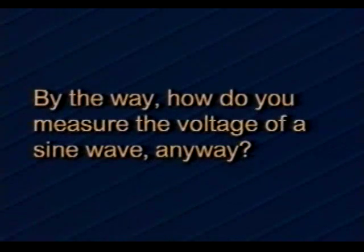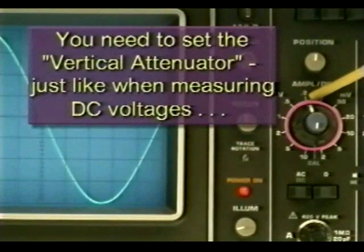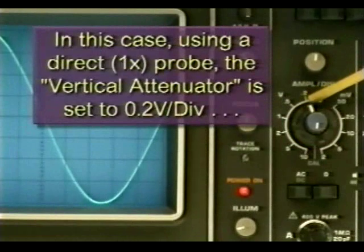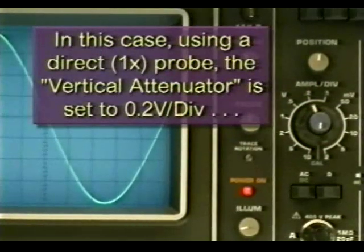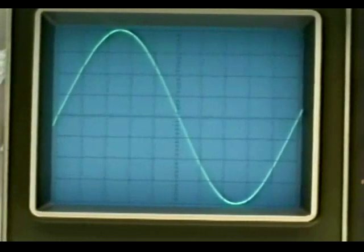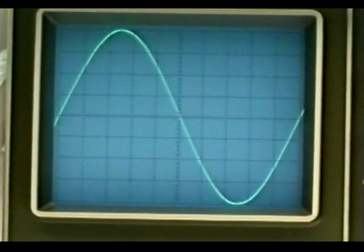So just how do you measure the voltage of a sine wave? You need to set the vertical attenuator just like when measuring DC voltages. In this case, using a 1x probe, the vertical attenuator is set to 0.2 volts per division. If we were using a 10x probe rather than a 1x probe, we'd have to multiply the vertical attenuator setting by 10. Now each division is worth 2 volts per division rather than 0.2.